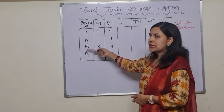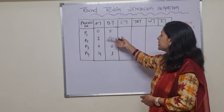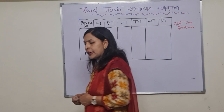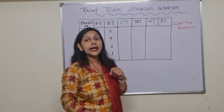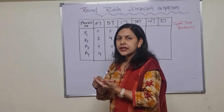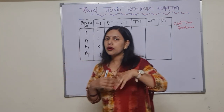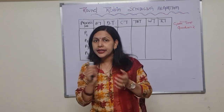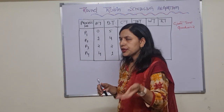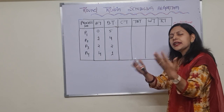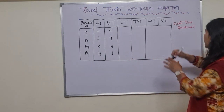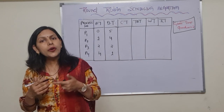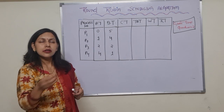We have four processes: P1, P2, P3, and P4, with their arrival times and burst times given. In Round Robin scheduling, the main important term is the time quantum. Unlike FCFS or priority scheduling, Round Robin uses a time quantum - here the given time quantum is 2. That means the CPU will be allotted to each and every process for two units of time.